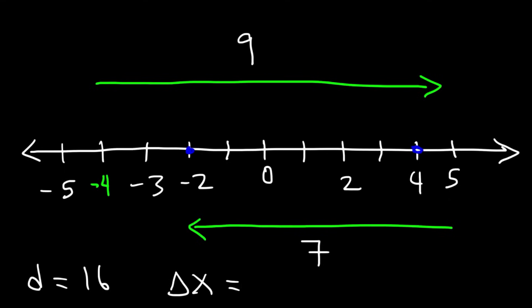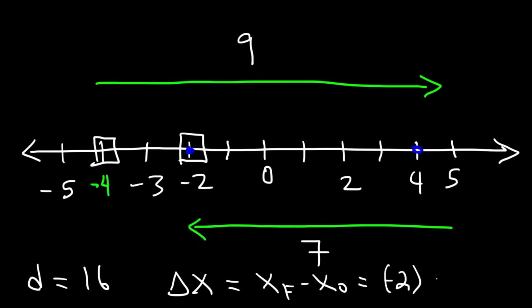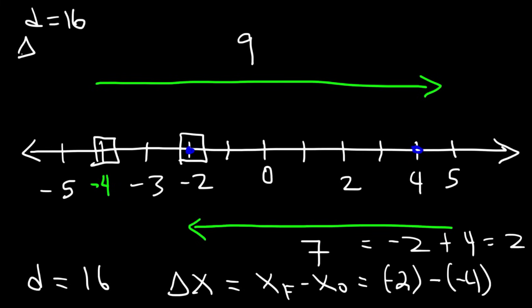To find the displacement, use the equation: final position minus initial position. The final position is negative 2 and the initial position was negative 4. So it's negative 2 minus negative 4, which equals negative 2 plus 4, giving positive 2. So the distance traveled is 16 units but the displacement is only positive 2 units. It makes sense — we started at negative 4 and ended at negative 2, so the net effect is we only traveled 2 units to the right.